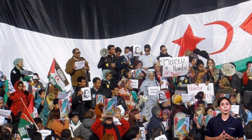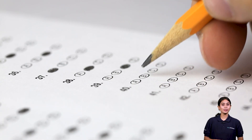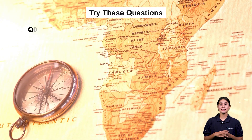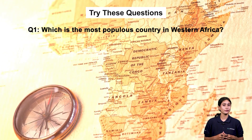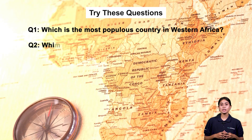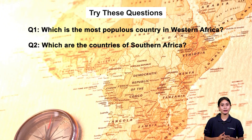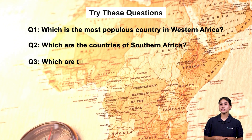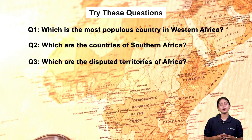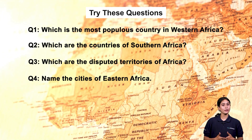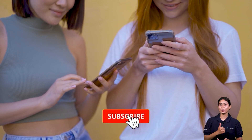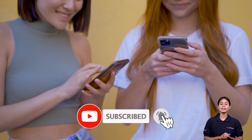Now let's try to answer some questions. Question 1: Which is the most populous country of Western Africa? Question 2: Which are the countries of Southern Africa? Question 3: Which are the disputed territories of Africa? Question 4: Name the cities of Eastern Africa. I hope you learned something new and interesting today. For more such interesting topics, do follow us. Thank you and happy learning.